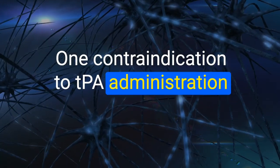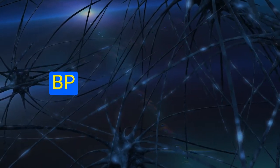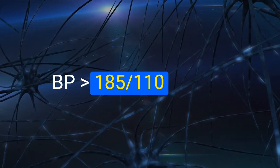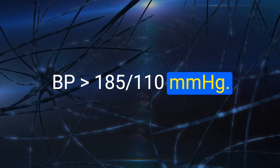61. One contraindication to tPA administration in stroke patients is BP greater than 185/110 mmHg.